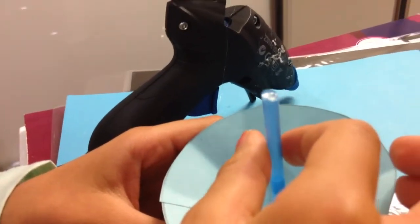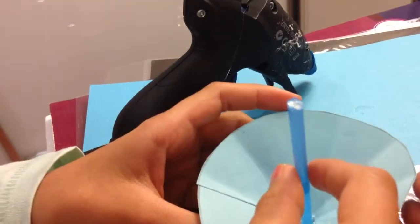If you don't hold it there, your straw might be wonky, so your umbrella might not be straight.